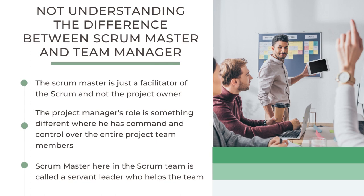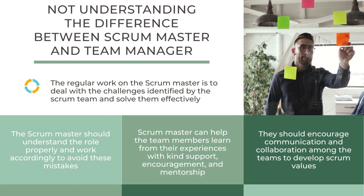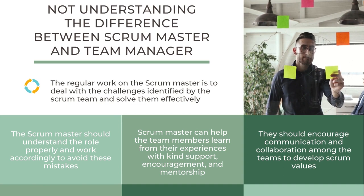The second mistake is not understanding the difference between Scrum Master and Team Manager. The role of the Scrum Master is not the same as Project Manager. The Scrum Master is just a facilitator of Scrum and not the project owner — the framework already defines the Scrum Master's roles. The Project Manager's role is different: he has command and control over the entire project team. Project Managers assign tasks and control team members, while the Scrum Team is self-organized and self-managed. The Scrum Master is called a servant leader who helps the team whenever it faces any issue, dealing with challenges identified by the Scrum Team and solving them effectively.